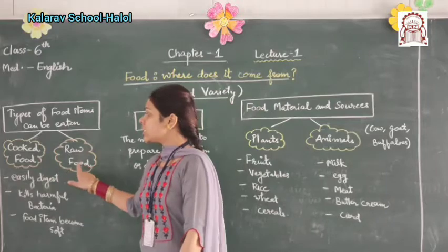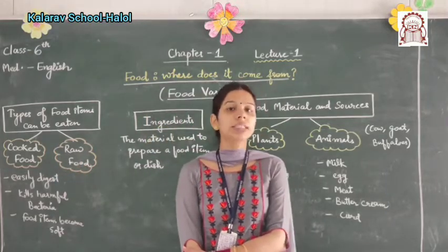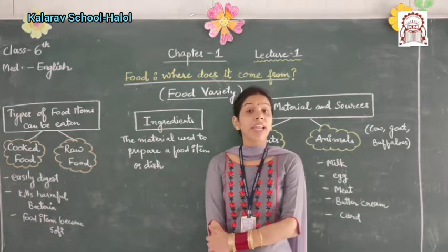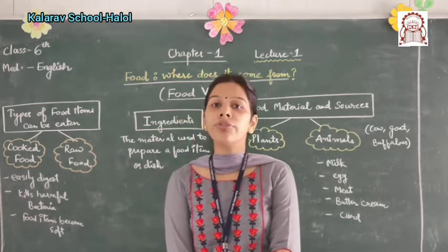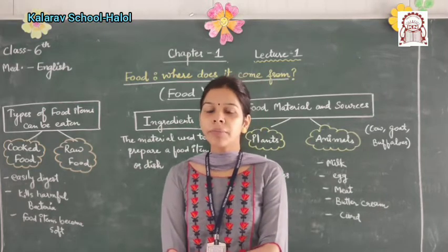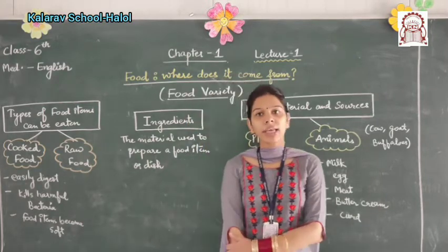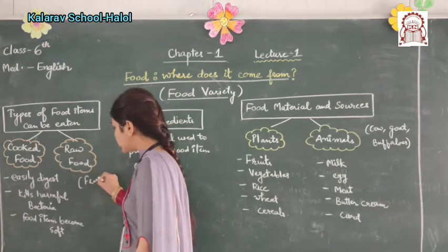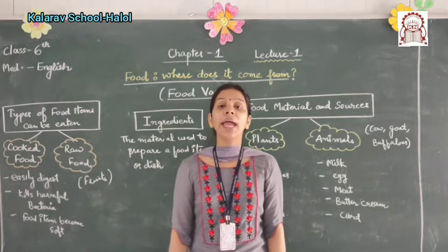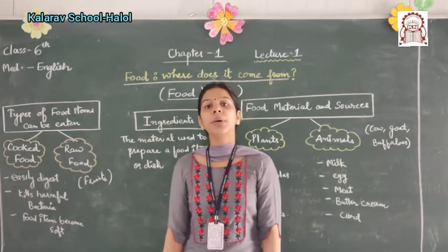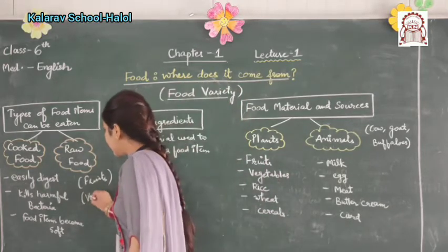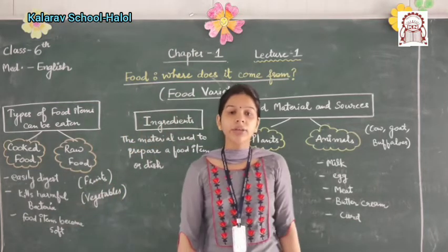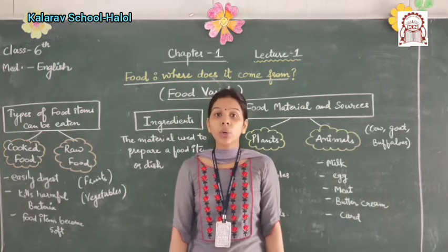The second category is raw food. Raw food does not need to be cooked and can be eaten directly. Can you give me some examples of raw food? I will give you some examples: fruits such as apple, mango, orange, and banana. Second, vegetables like carrot, radish, tomato, and onion.